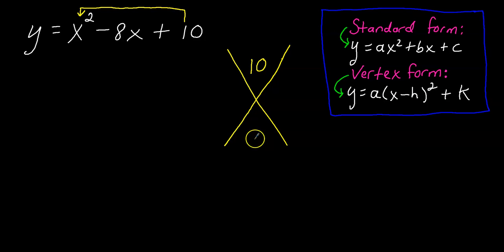Now what I'm looking for is two numbers that when I multiply give me 10, but when I add those same two numbers, I get negative 8. You should see there's no combination that works.